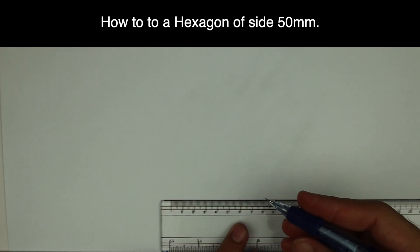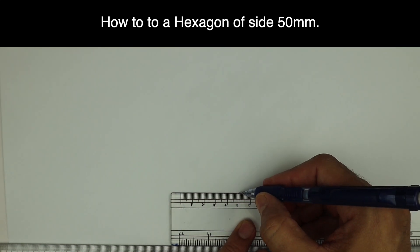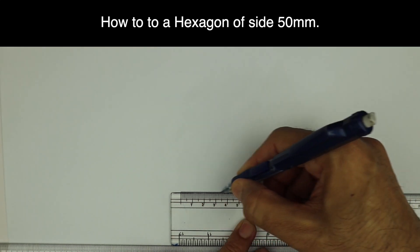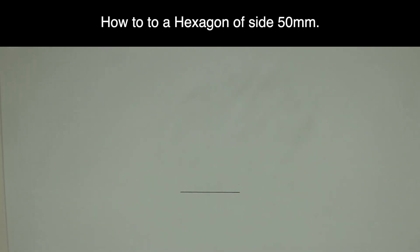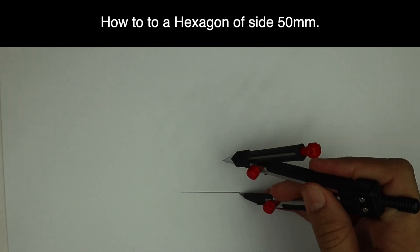Welcome to technical drawing. Today we are going to draw a hexagon of side 50mm. So first we will draw a side of 50mm. After drawing 50mm, we'll take it in our compass like this.